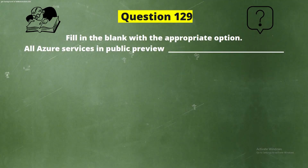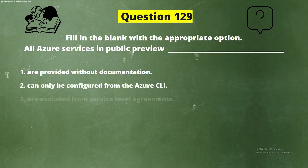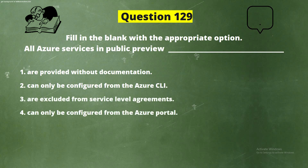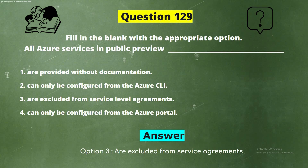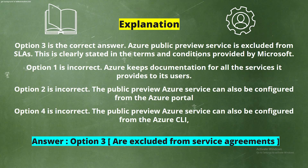Question 129. Fill in the blank with the appropriate option. All Azure services in public preview: Number 1, are provided without documentation; Number 2, can only be configured from the Azure CLI; Number 3, are excluded from service level agreements; Number 4, can only be configured from the Azure portal. The correct answer is Option 3 — are excluded from service level agreements. Azure public preview service is excluded from SLAs, as clearly stated in the terms and conditions provided by Microsoft.